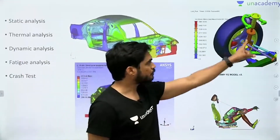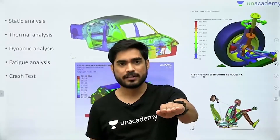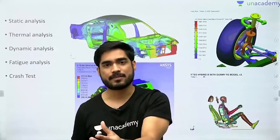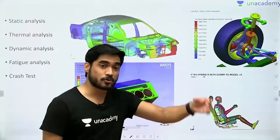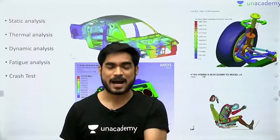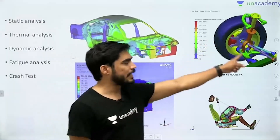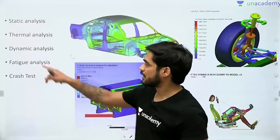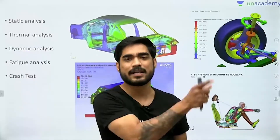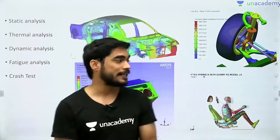Then there is dynamic analysis. This is the analysis of a suspension system — when a car is moving on the road, the suspension system is subjected to different loads at different times. The load keeps changing, and the analysis of stresses developed due to that changing load is dynamic analysis. Then there is fatigue analysis — if the load is fluctuating and repeated, how much stress will be developed and whether the product will survive — that is fatigue analysis.